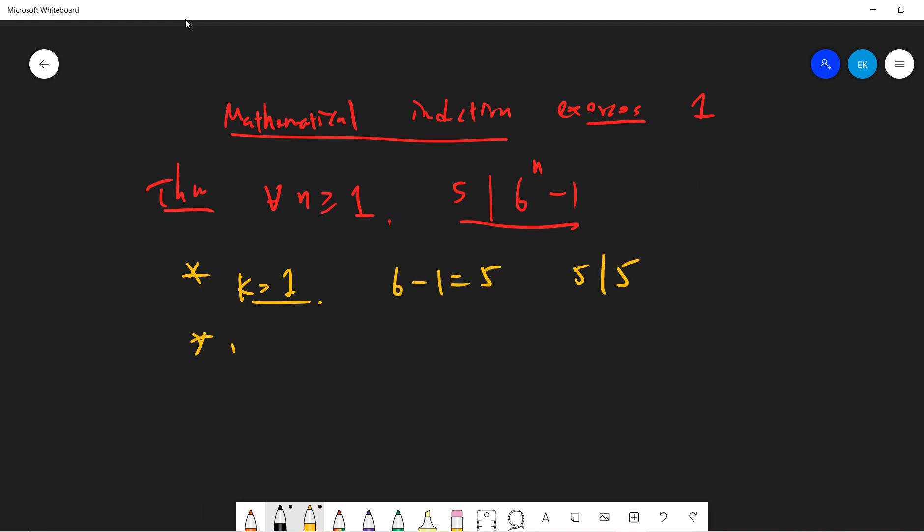How about an induction step? So induction step is assume that 5 divides 6 to the k minus 1. So 6 to the k minus 1 divided by 5.